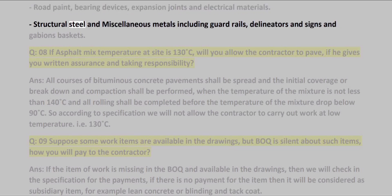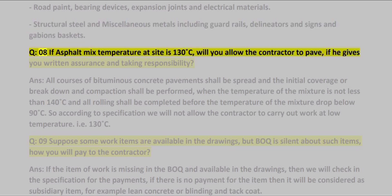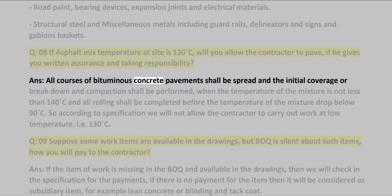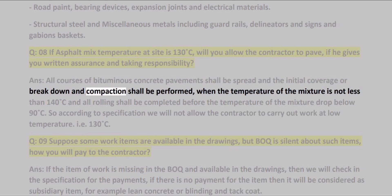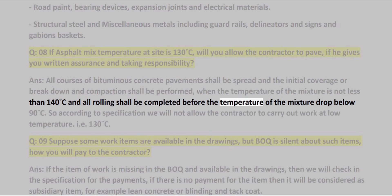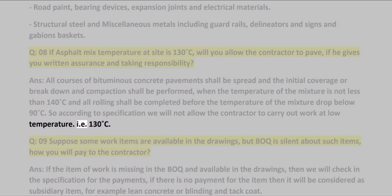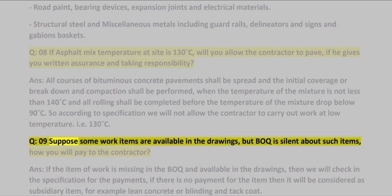Also covered are structural steel and miscellaneous metals including guardrails, delineators, signs, gabion baskets. Q08: If asphalt mix temperature at site is 130°C, will you allow the contractor to pave if he gives written assurance? ANS: All courses of bituminous concrete pavements shall be spread and the initial breakdown and compaction shall be performed when the temperature of the mixture is not less than 140°C, and all rolling shall be completed before the temperature drops below 130°C.